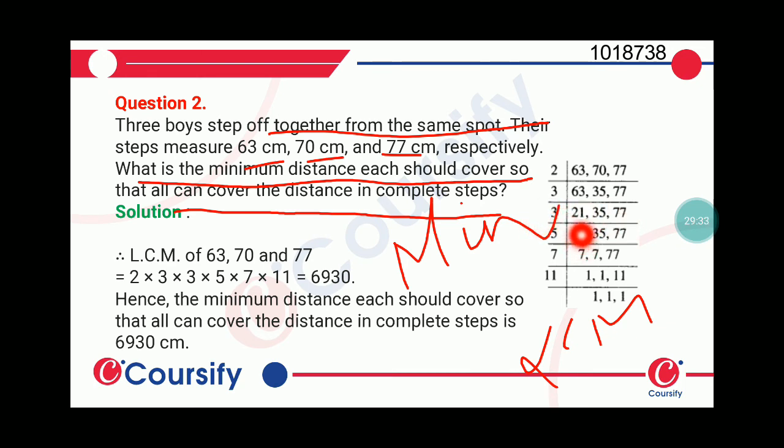Now the next number is 5. Because now 3 cannot divide anything. So coming to 5. 5 divides 35 to get 7. So others are copied. Now we have to divide by 7. We get 1, 1, and 11. Now we have to divide by 11.